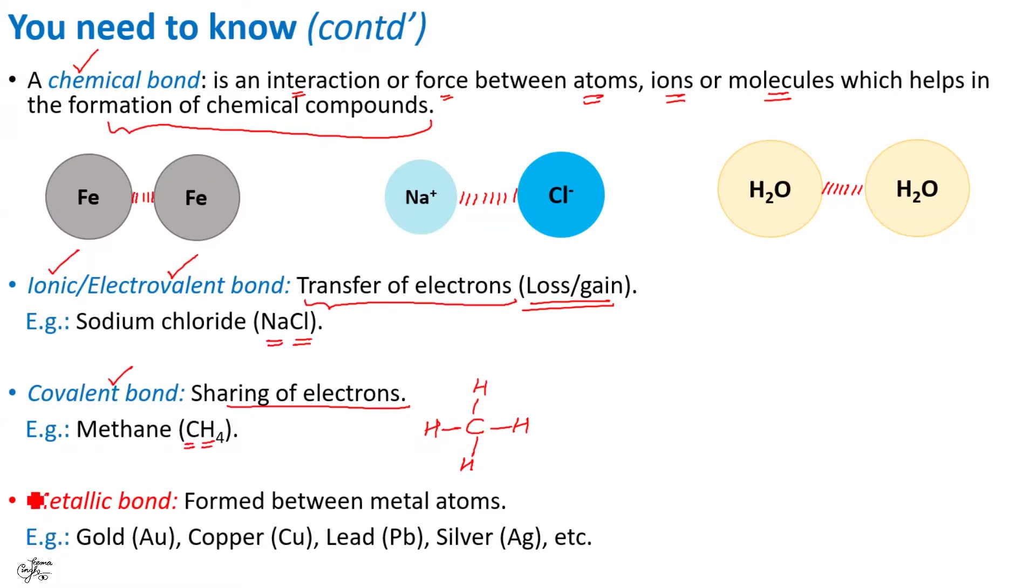The next one is metallic bond, which is a bond formed between metal atoms. For example, in metals such as copper, gold, lead, silver, etc., the atoms are held together by metallic bond.